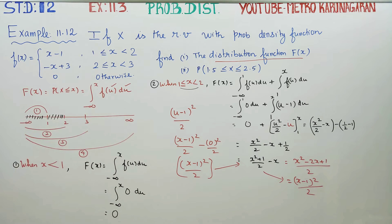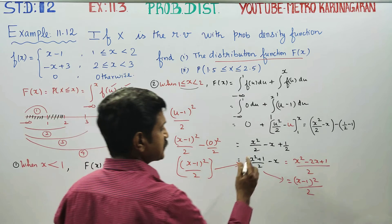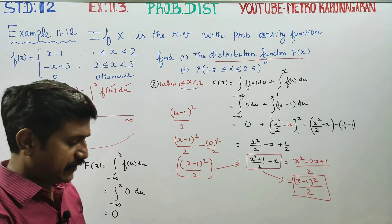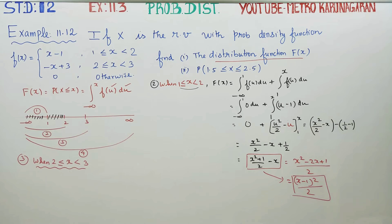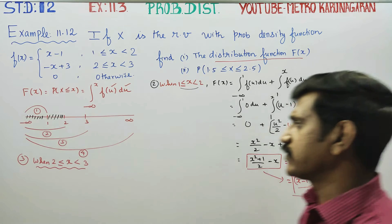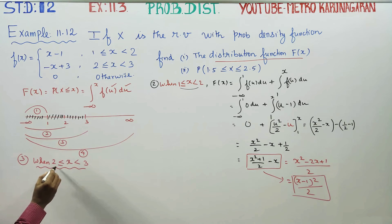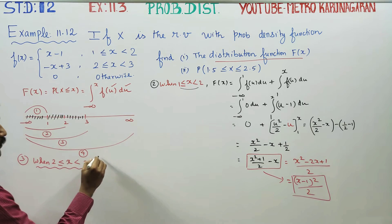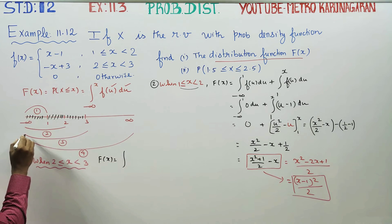Now the second interval is over. After completing the second interval, you go to the third interval. The idea for the integration in the third stage is to again start from minus infinity. The cumulative distribution function formula will start from the beginning again.